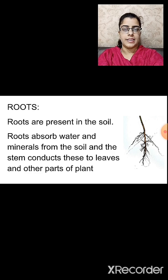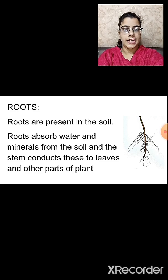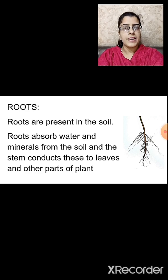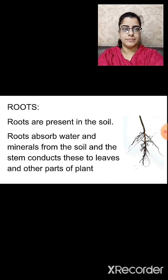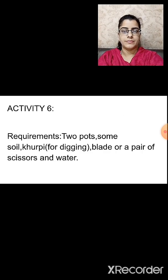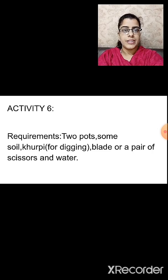We studied earlier that the stem helps in the conduction of water and minerals to the leaves and other parts attached to it. But from where does the stem get water and minerals? The roots absorb water and minerals from the soil, which are then transported by the stem to the different parts of the plant. Now we will perform different activities to study the different functions of the root.